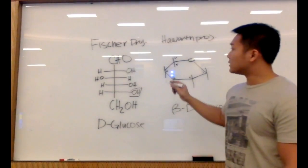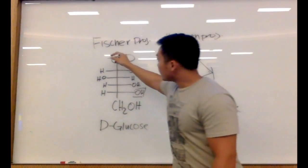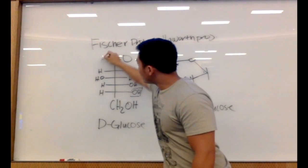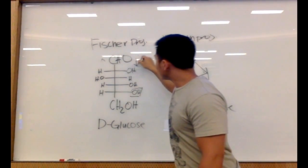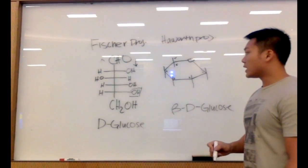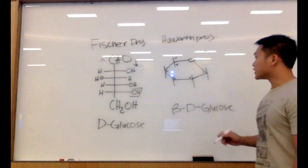First, I like to label my Fischer projection and label my left going up and my right going down. This will help me determine which groups are going up and down on my Haworth projection.